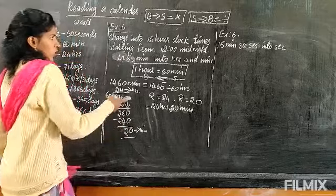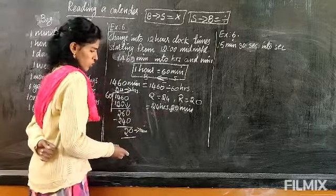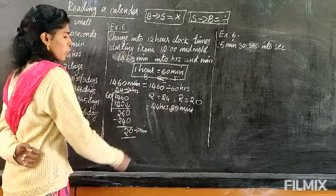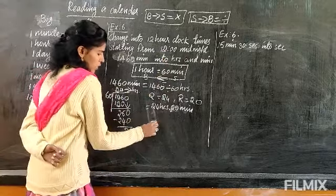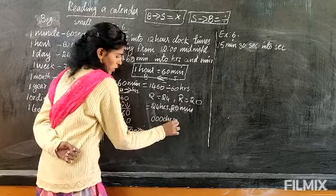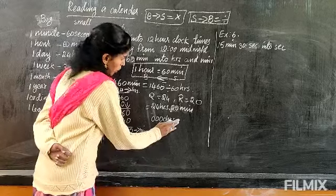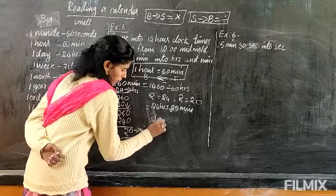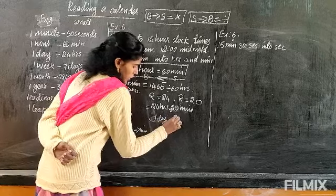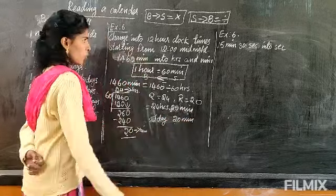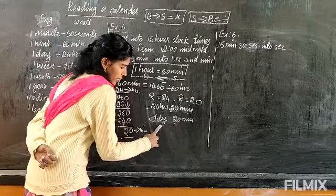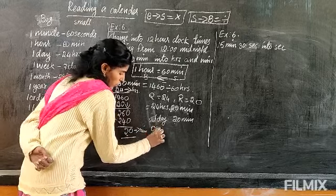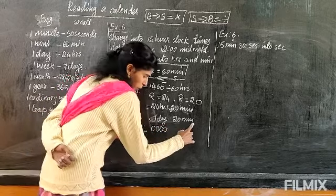Now we have to convert into 12 hours. We have 24 hours and 20 minutes. From 12 midnight, 24 hours means it is 00 hours — because 24 hours equals 1 day. After 1 day finishes, 20 minutes is left. When the day completes, starting from 00 hours back to 00 hours — and then 20 minutes comes after.